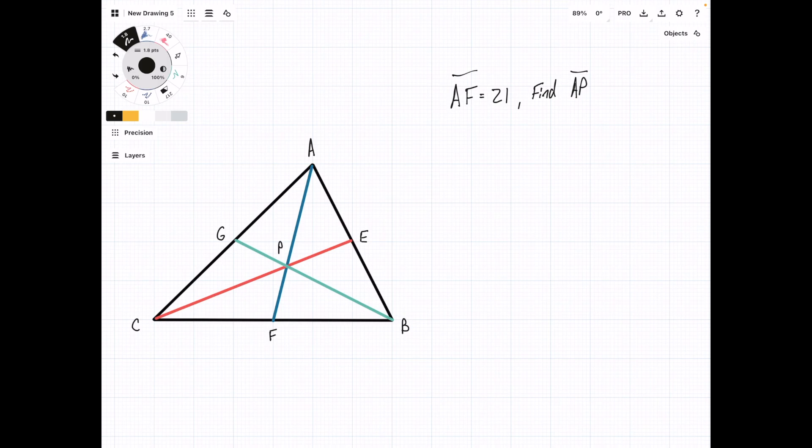So now we know that this length is 21. The takeaway here is that the centroid divides this line into a 2 to 1 ratio. So let's take AF and divide it by 3. 21 divided by 3 is going to be equal to 7. Then we know that the side closest to the vertex is going to be that 2x and the other side is the x.